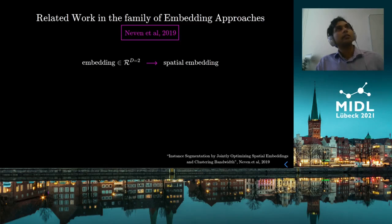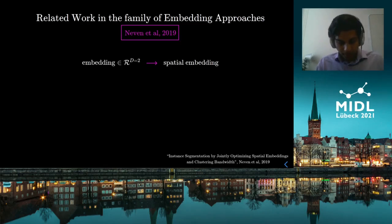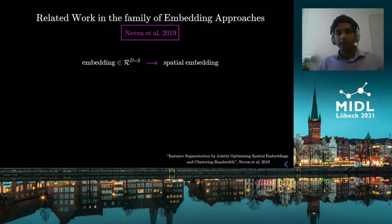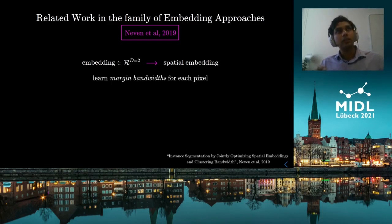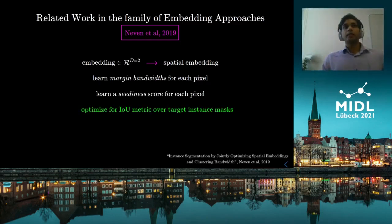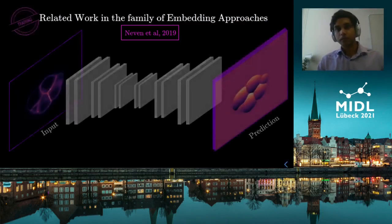In Neven et al. 2019, several improvements were made to the 2017 work. One key difference is they used a two-dimensional pixel embedding, rendering it in the same space as the pixel locations — an effective spatial embedding. Additionally, instead of using fixed length scales for these forces, they learn a margin bandwidth for each pixel. They also learn a CDNs score for each pixel. Most importantly, they optimize for the IOU metric during the training process.